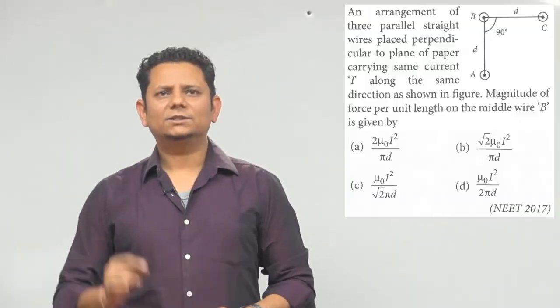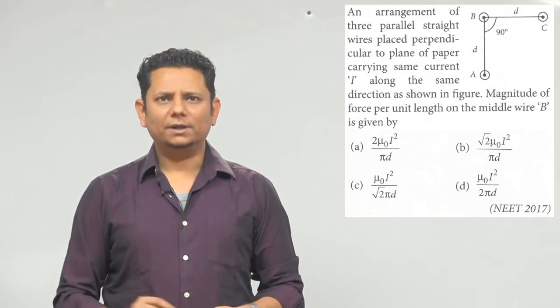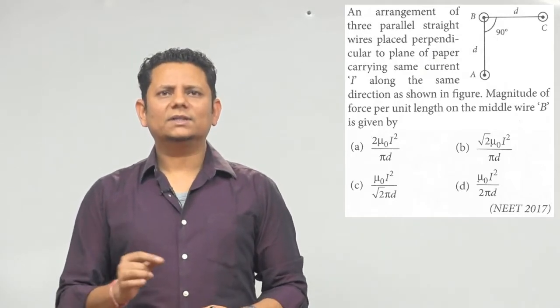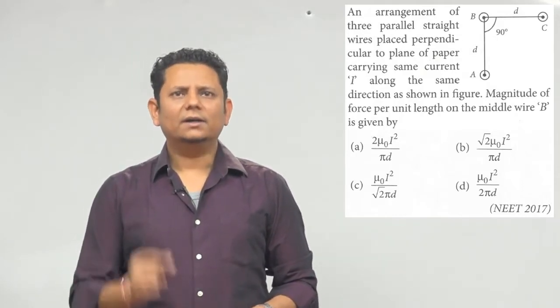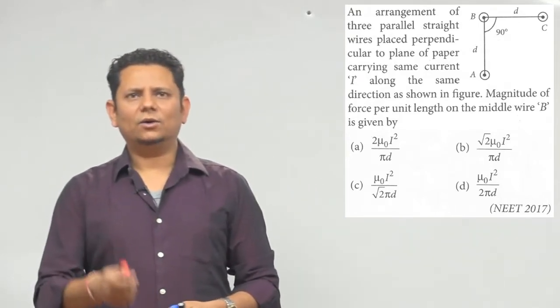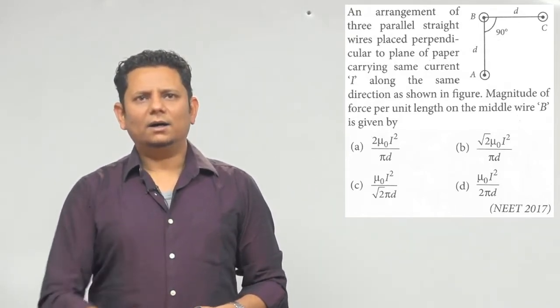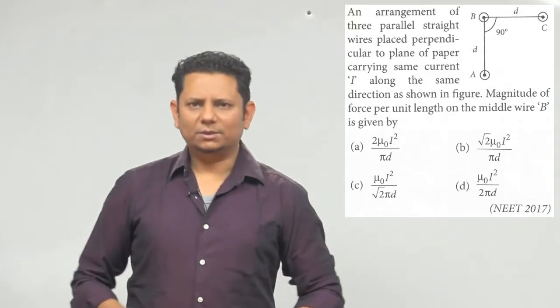Next question. Question says, an arrangement of three parallel straight wires placed perpendicular to plane of paper carrying current I along the same direction as shown in figure. Magnitude of force per unit length on the middle wire B is given by, and 4 options I have given you.